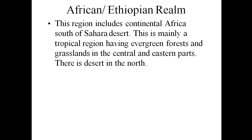The African or Ethiopian realm was earlier known as the Ethiopian realm, but since Ethiopia refers to one country, it has been extended to mean the whole of Africa and is now more popularly known as the African realm. This region includes the entire continent of Africa south of the Sahara Desert. It is mainly a tropical region with a hot climate — evergreen forest and grassland in the center, with grasslands in the central and eastern parts, and the Kalahari Desert in the north of this region.